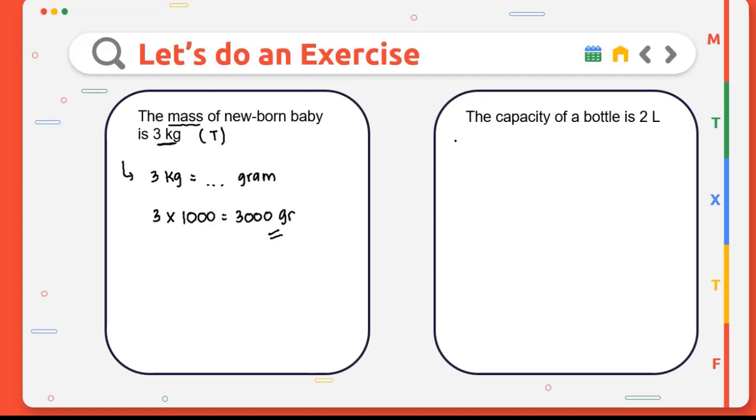For question number 2: The capacity of a bottle is 2 liters. This is a true statement because liter shows the units of capacity. Let's convert from 2 liters to milliliters. From liter to milliliters, we go down three steps, so we multiply 2 by 1000. This equals 2000 milliliters.